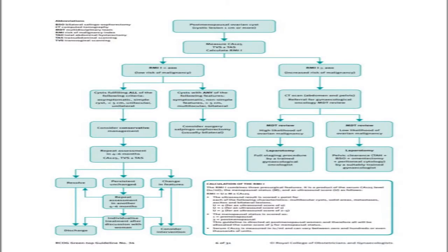The cut-off value of the RMI is 200. If the RMI is below 200, the condition can be managed in the general gynecology unit based on clinical presentation and ultrasound. If the ovarian cyst is asymptomatic, smaller than five centimeters, unilocular, and unilateral with no solid areas, it can be managed conservatively by repeating the ultrasound in four to six months.